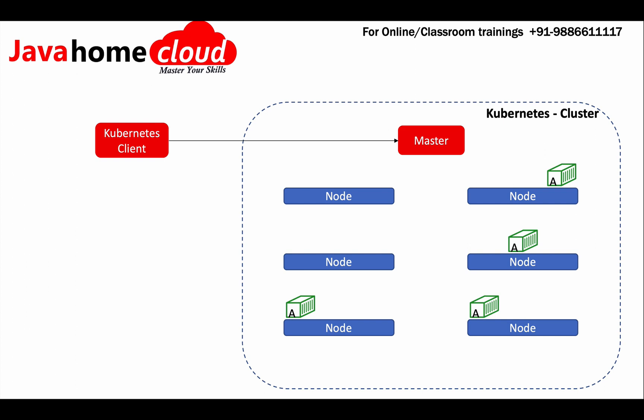Kubernetes has a lot of features built in which makes our life easy. For example, if a specific node fails in a cluster, any containers running on that node are automatically recovered by Kubernetes. When there is a node failure, the master detects it and has information about what containers were running on that specific node.